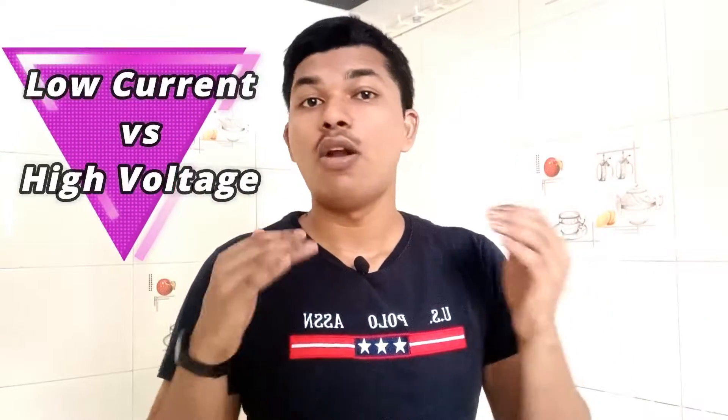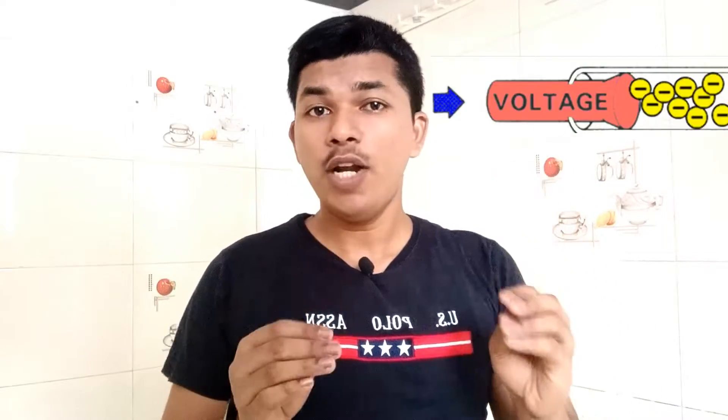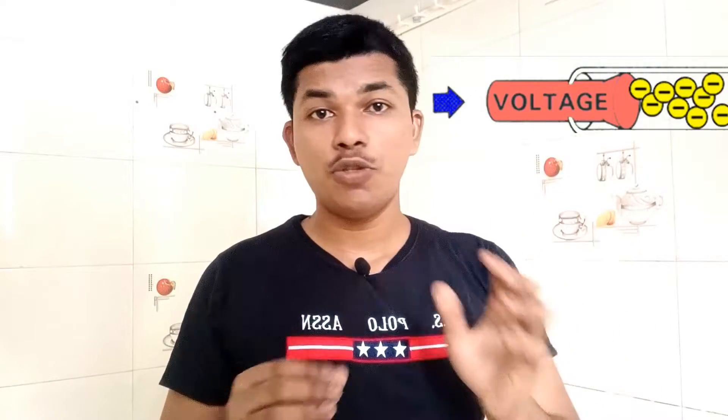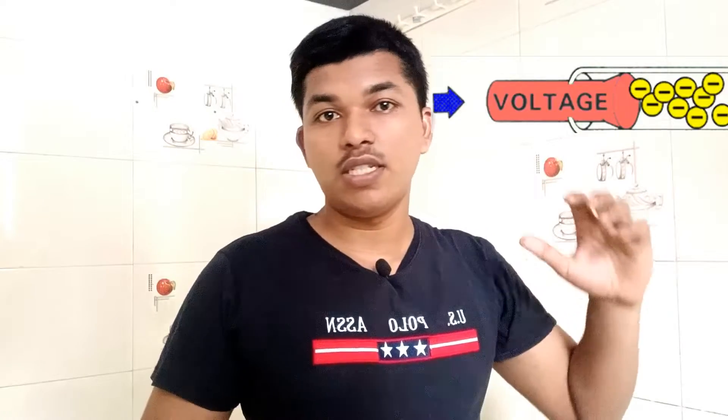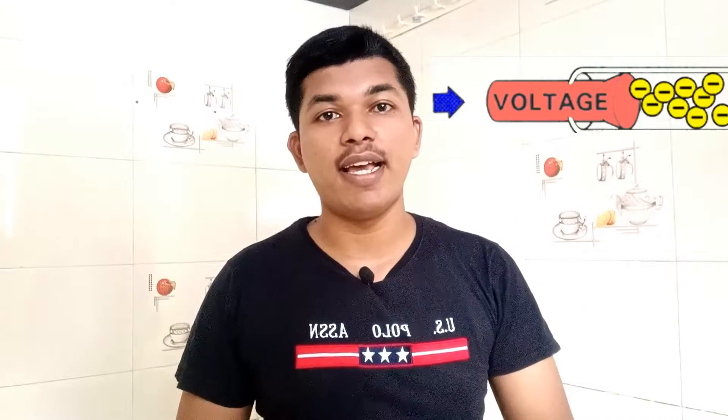The third case is low current but high voltage. There are few electrons passing through a conducting wire, but the force pushing them is very high — let's say 230 volts. It will definitely cause an injury. Because even though there are few electrons, the high force causes them to flow inside our body, which may harm us.